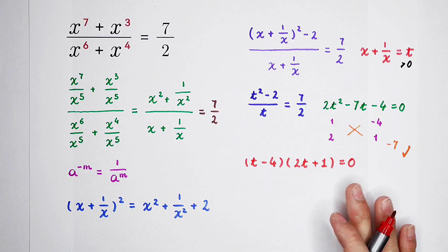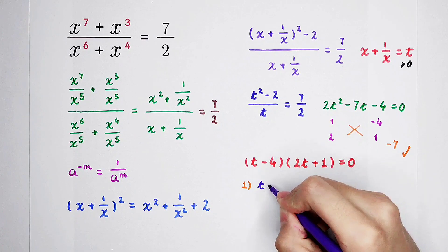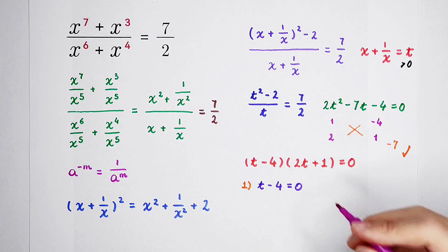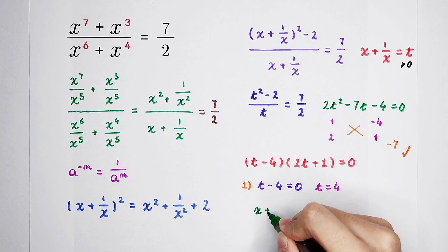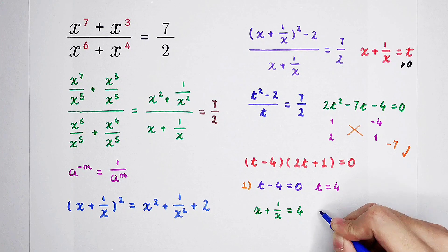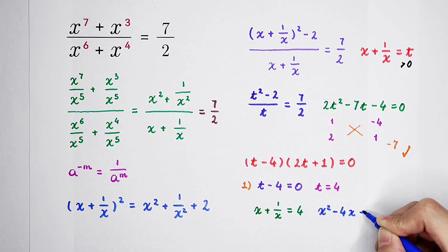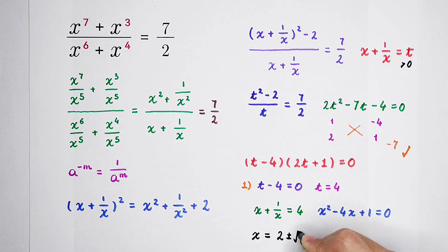The left side is a product equal to 0, so we have two cases. First case: t minus 4 equals 0, so t equals 4. Since x plus 1 over x equals t equals 4, multiply both sides by x to get x squared minus 4x plus 1 equals 0. Using the quadratic formula, the two real solutions are x equals 2 plus or minus square root of 3.